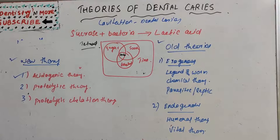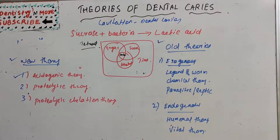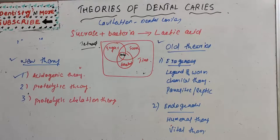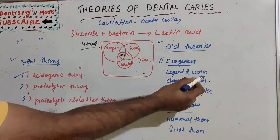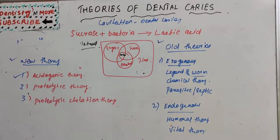Starting with the old theories — the legend of the worm. During the 5000 BC period, it was believed that dental caries was caused by worms. These worms drank the blood of teeth and fed on the roots of jaws. That was the worm theory. There was no scientific proof; it was completely unscientific.